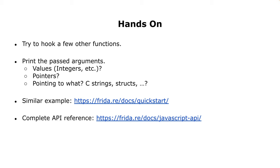As a hands-on exercise, try to hook a few other functions. Print the passed arguments and find out if these are integers, pointers, pointers to what, C-strings, or structs. You can look into the quick start guide of Frida and the complete API reference - note it's sometimes a bit outdated, so double-check, but usually the simple examples just work.